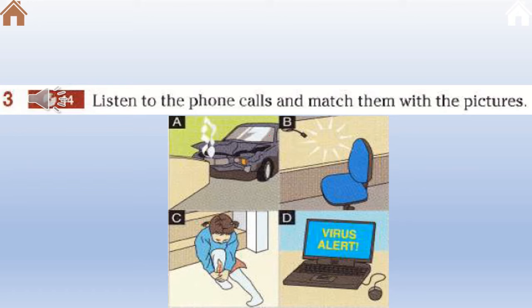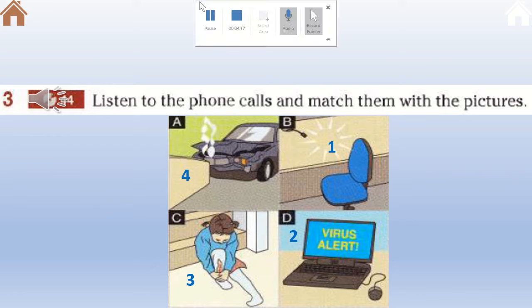Let's answer one by one. The first incident: someone has stolen the caller's computer — this was picture B. The second issue: the caller has lost all her data, so she called the IT department — this is number two. Third: the girl has fallen and as a result cut her leg — this is number three. Finally, the driver has crashed into some obstacle — this is number four.